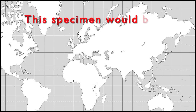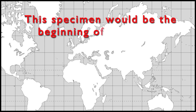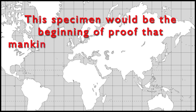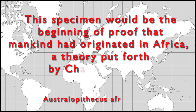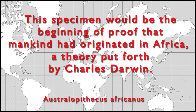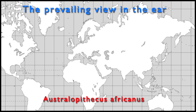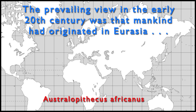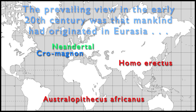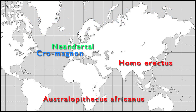This specimen would be the beginning of proof that mankind had originated in Africa, a theory put forth by Charles Darwin. The prevailing view in the early 20th century was that mankind had originated in Eurasia, due to discoveries of Neanderthal, Cro-Magnon, and Homo erectus fossils in Europe and Asia.